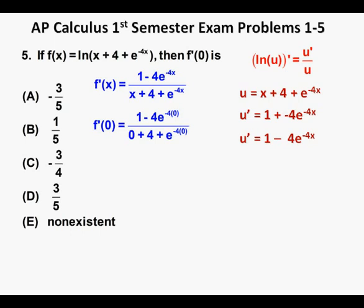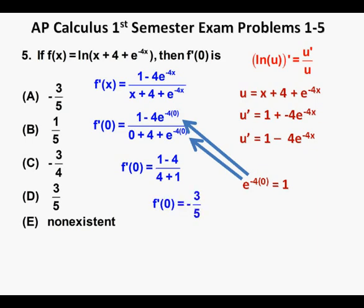In simplifying, e to the power of negative 4 times 0 becomes e to the 0 power, which simplifies to 1. And so f prime of 0 is 1 minus 4 over 4 plus 1, which further simplifies to f prime of 0 equals negative 3 over 5, or negative 3 fifths. So with that, we box in our answer and pick our correct answer choice A.